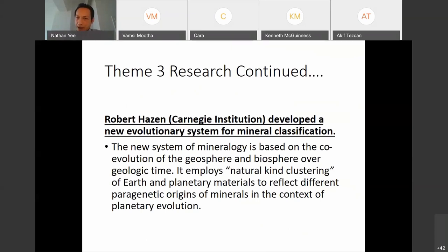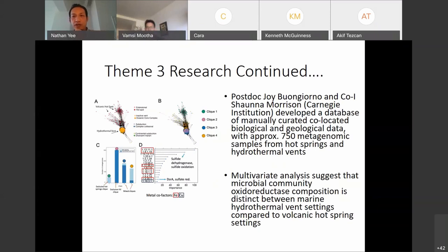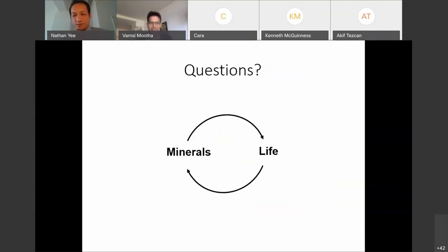So a preview of what's to come tomorrow. This research theme three is co-led by Bob Hazen at Carnegie. So Bob has developed a new and revolutionary mineral classification system based on natural kind clustering. So he's used natural kind clustering to understand the origin of minerals in the context of planetary evolution. Bob is tremendously productive and I'm eager to hear the work he's done in recent months. Okay, so G.W. and Shona have also developed a database that contains both biological and geologic data, focusing mainly on terrestrial hot springs and marine hydrothermal vents. In their analysis, they found that there are distinct differences between the microbial communities associated with marine hydrothermal vents compared to volcanic hot springs. So G.W. will be giving that talk tomorrow.